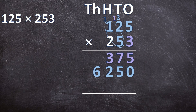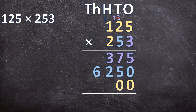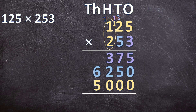Now we move on to 200 times 125. Cancel the carried 2 and 1 from before. Remember, we're multiplying by 200 not by 2, so we add two zeros in the answer line before multiplying the digits. 5 times 2 is 10 — write down 0 and carry 1. 2 times 2 is 4, plus the carried 1 is 5. 1 times 2 is 2. So 200 times 125 is 25,000.